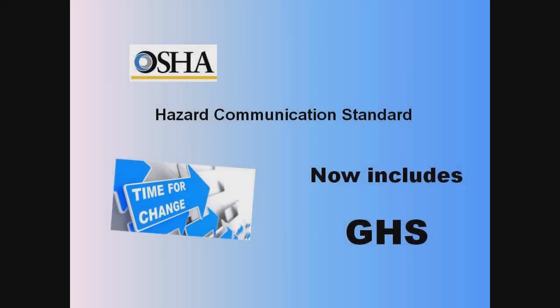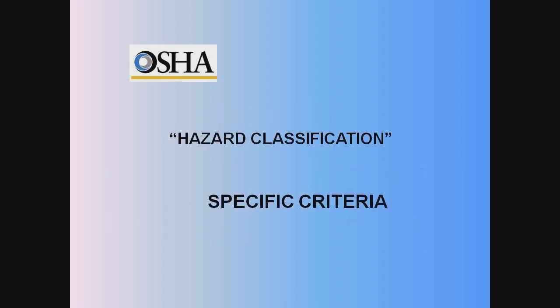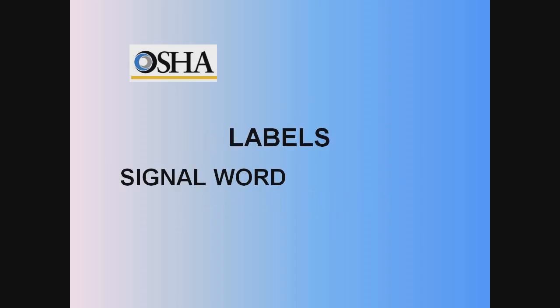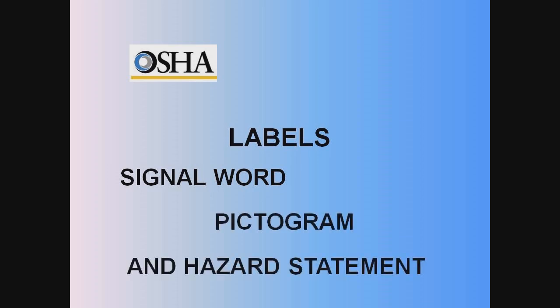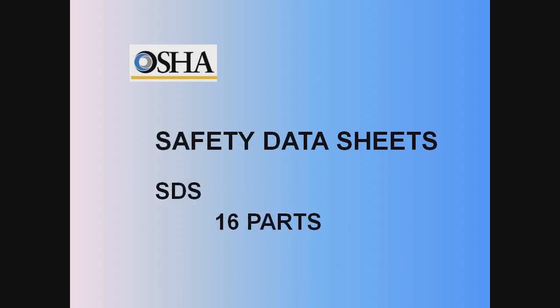OSHA's Hazard Communication Standard is designed to ensure that information about chemical hazards and associated protective measures are disseminated to all workers. This standard has been revised to include the GHS. The major changes you should know right now are: hazard classification, which replaces hazard determination, providing specific criteria for classification of health and physical hazards as well as mixtures; labels requiring harmonized signal words, pictograms, and hazard statements; and Safety Data Sheets now having a specified 16-section format.